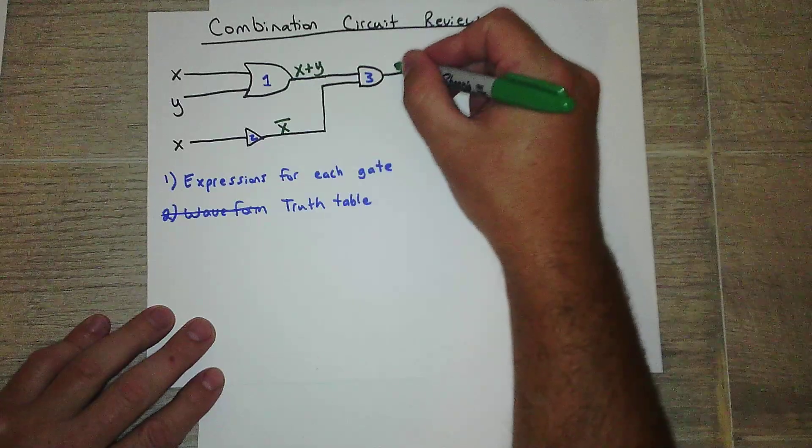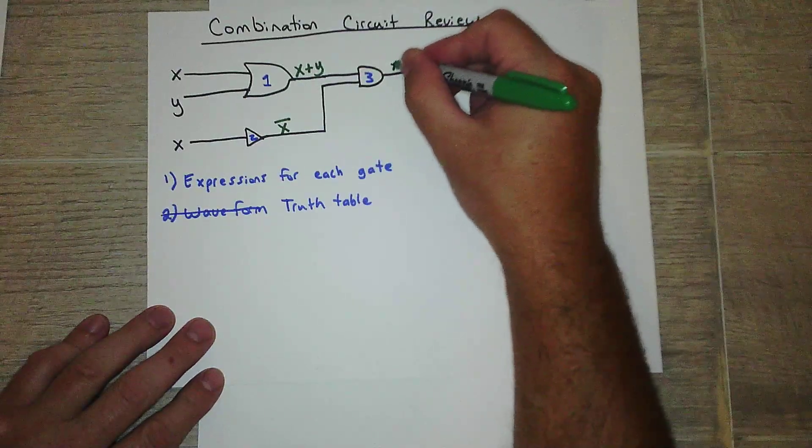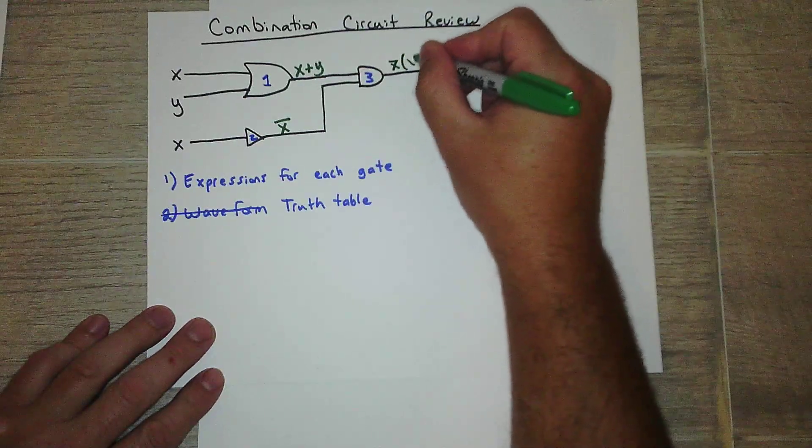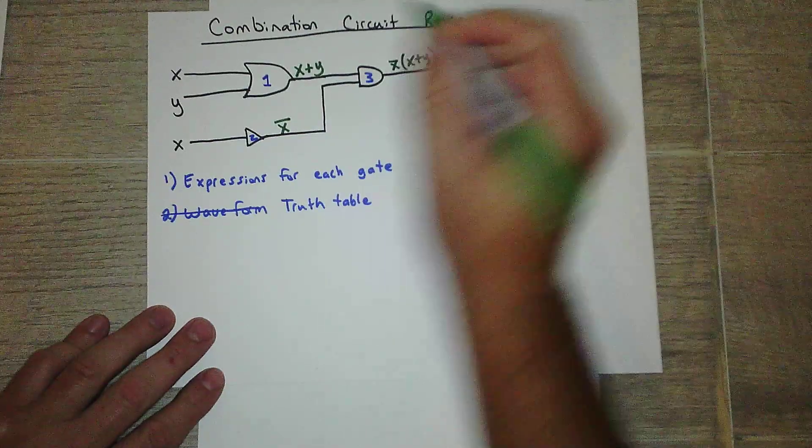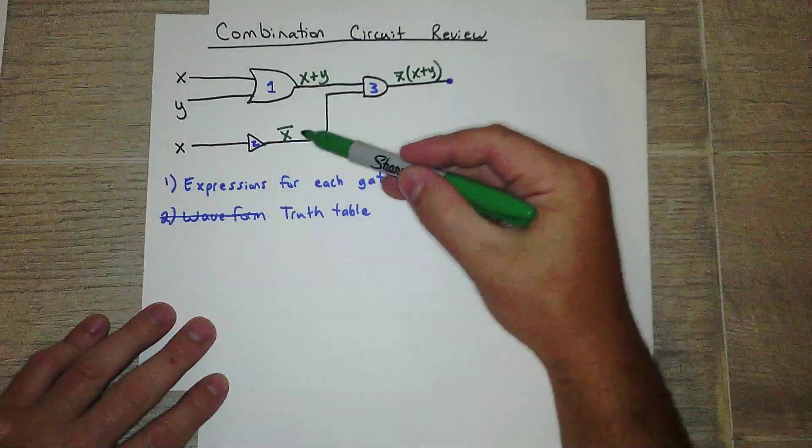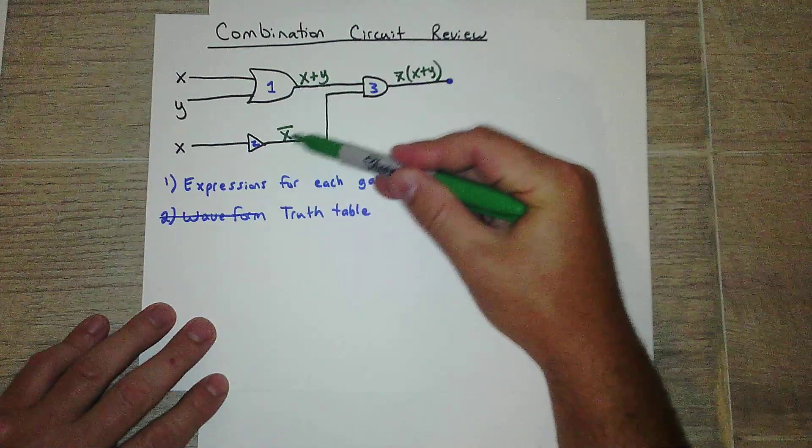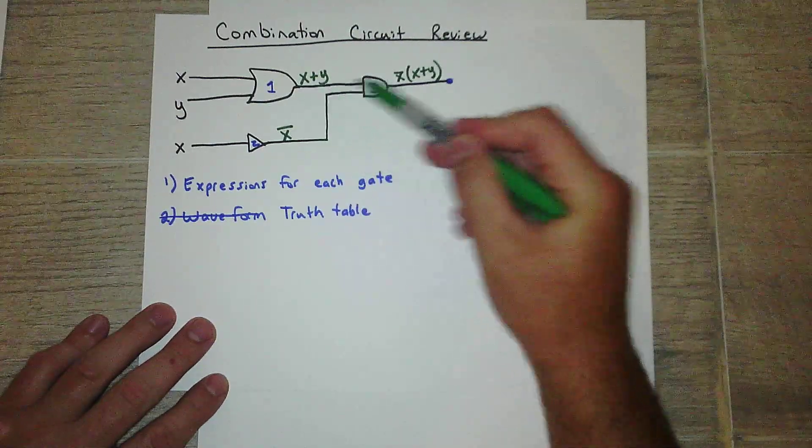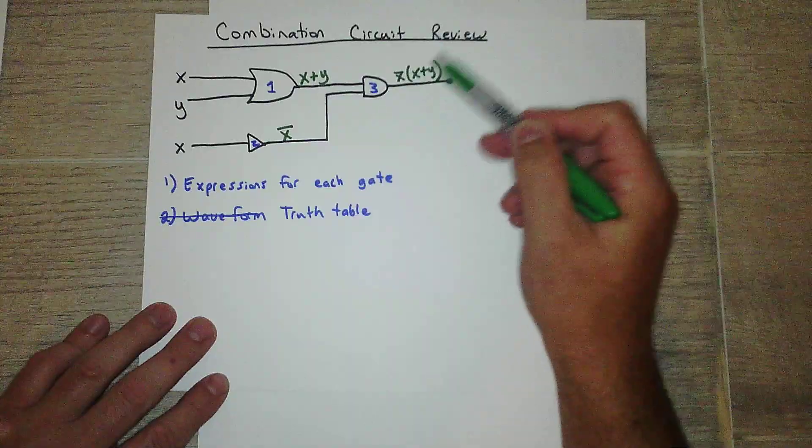So remember, and gate is multiplication. So you just multiply the two. Okay, so that's my and gate. So it's not x and x or y. Remember, and gate is represented by multiplication.